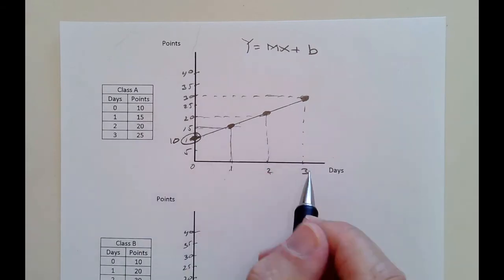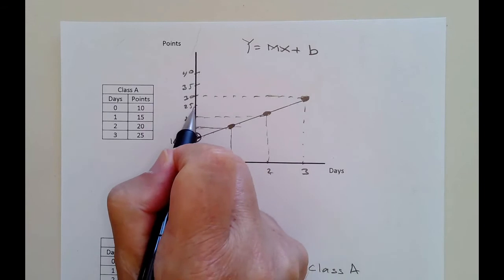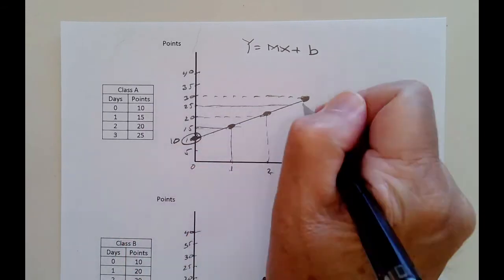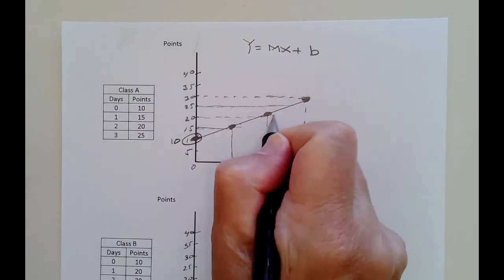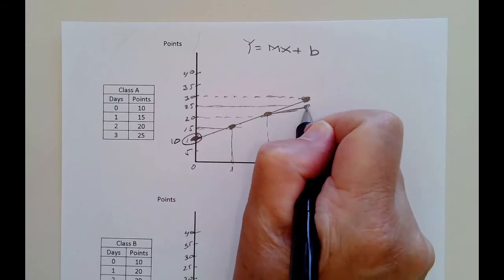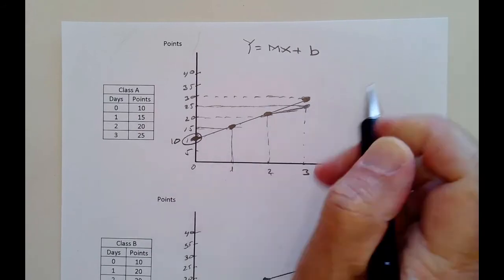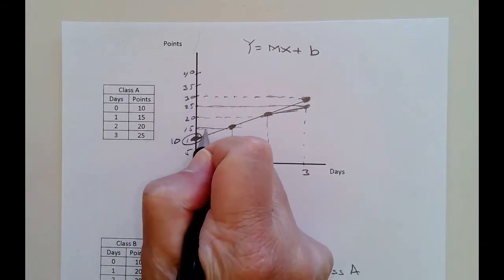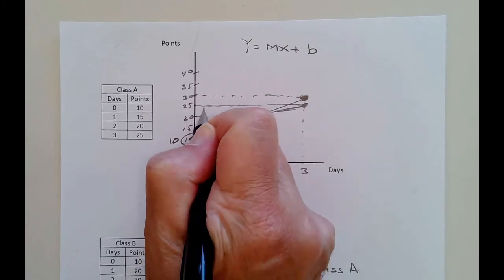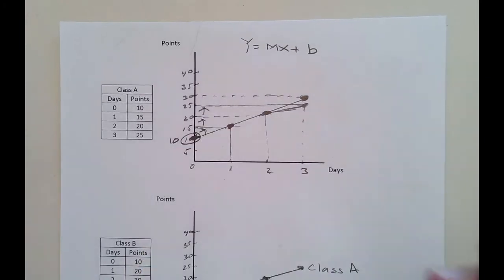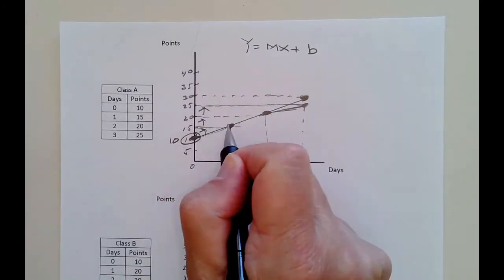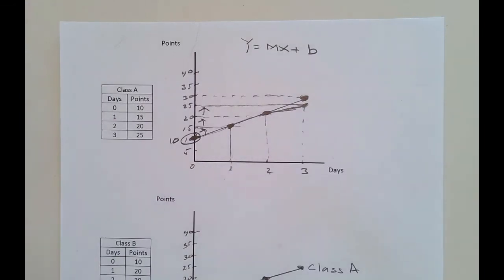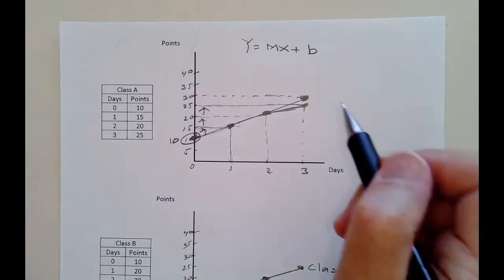I just noticed I graphed this wrong. So there we have 5 more: 5 to 15, to 20, and then to 25. My line is off a bit, and that's okay. In the previous lecture I made a mistake by going to point 30 — that has now been corrected.